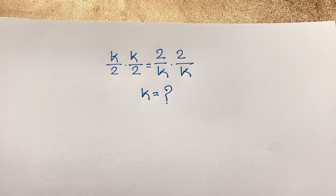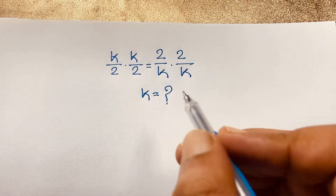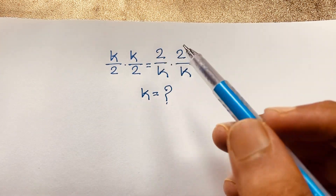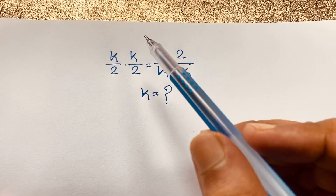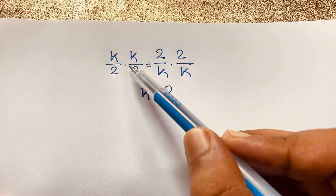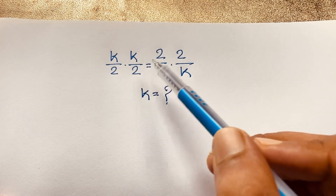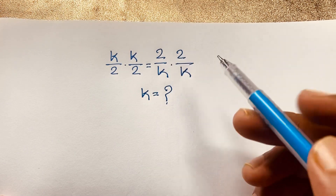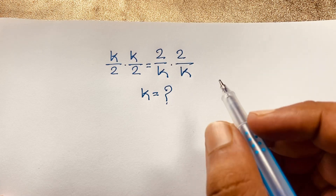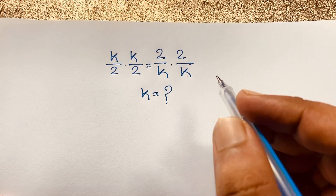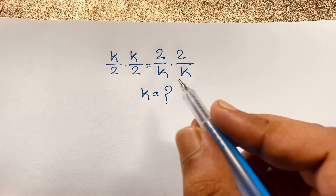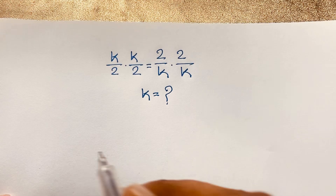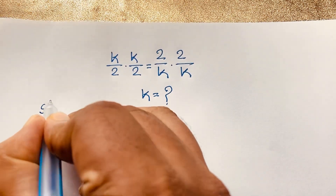Welcome to my YouTube channel. Today we have solved an interesting math problem. The question is: k over 2 times k over 2 is equal to 2 over k times 2 over k. Find k. This is the math problem we will solve.